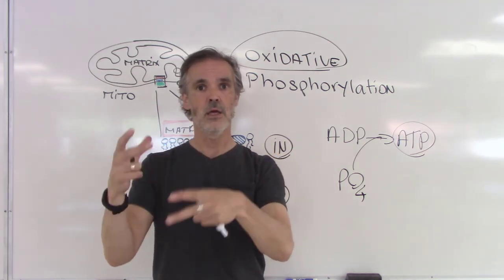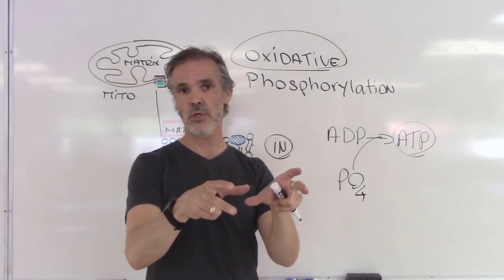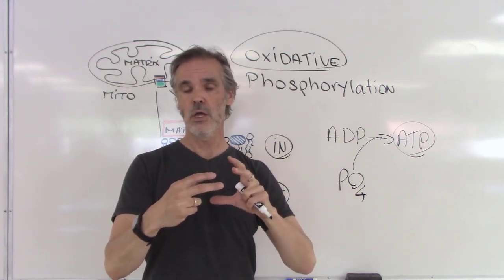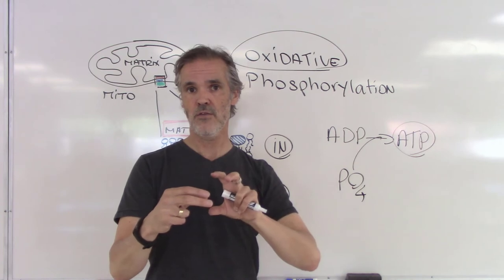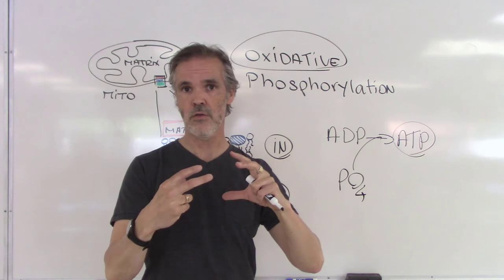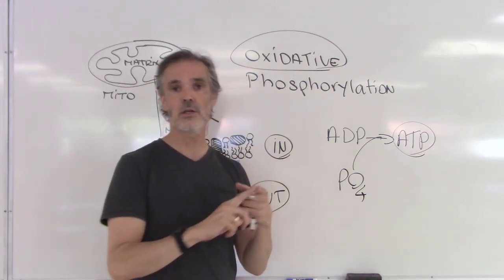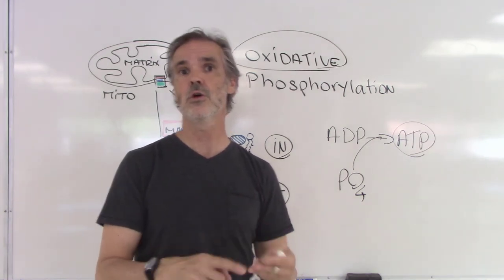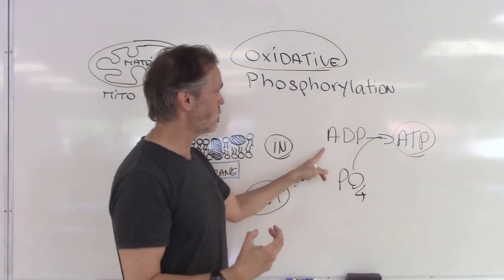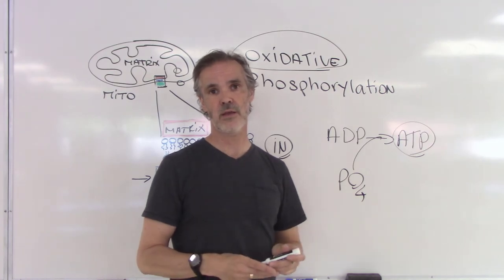Glucose enters the cell, gets degraded into pyruvate. Pyruvate enters the mitochondria. The mitochondria converts this molecule into carbon 6, 4, and 5, and 4, releasing carbon dioxide, harvesting the electrons. Where are the electrons? The electrons are inside a transporter, NADH and FADH2. What are we going to do with those electrons? We're going to use the high energy in order to convert ADP into ATP. That's what we shall see in the next step.